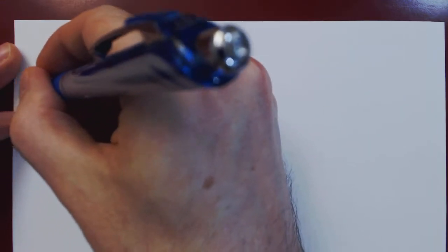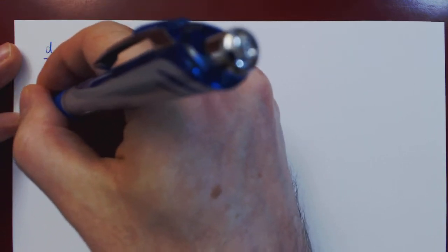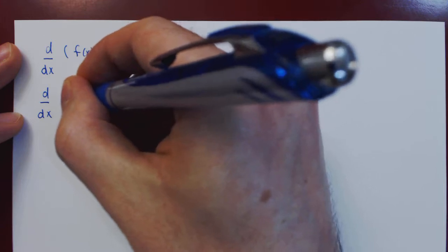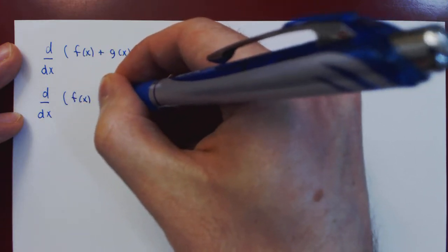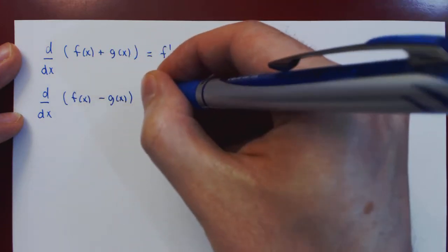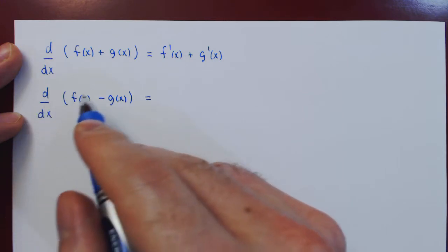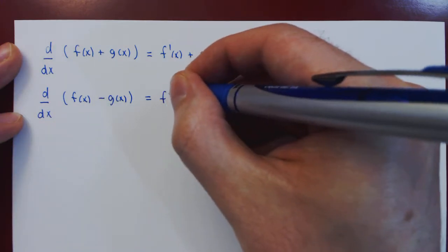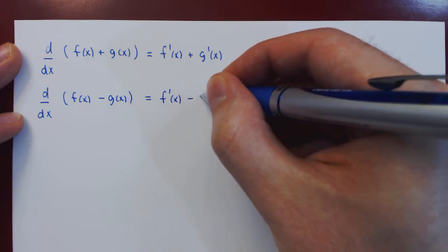And if you ask, well, how does the derivative behave over now a difference between f of x and g of x? And the result is the same. The derivative of a difference of two functions will be the difference of the respective derivatives.